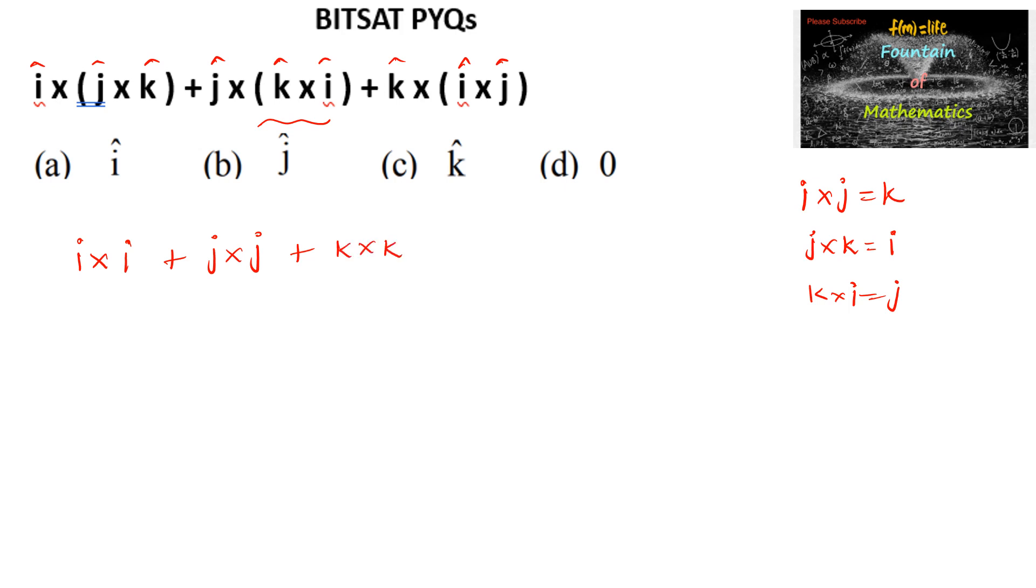So i cross i is nothing but 0, j cross j is 0, and k cross k is 0. So we can give the final sum as 0, which is option D.